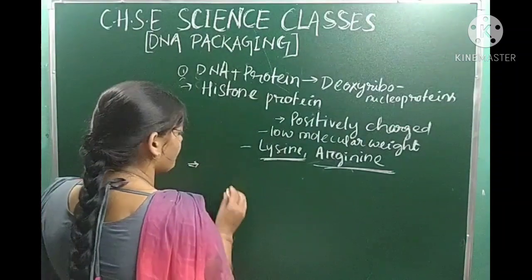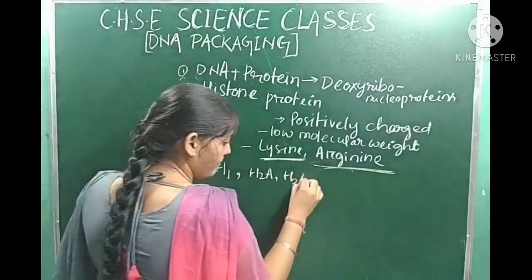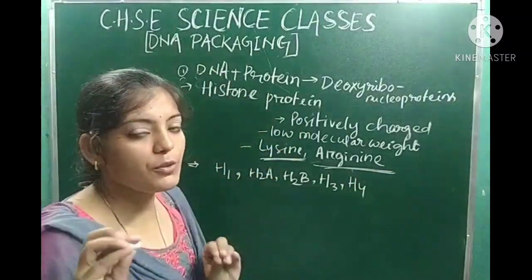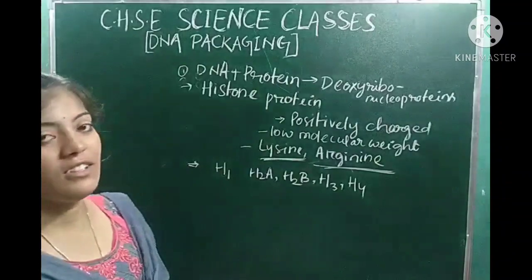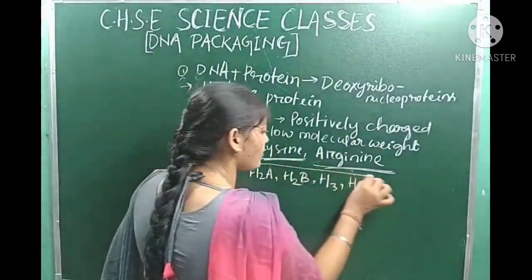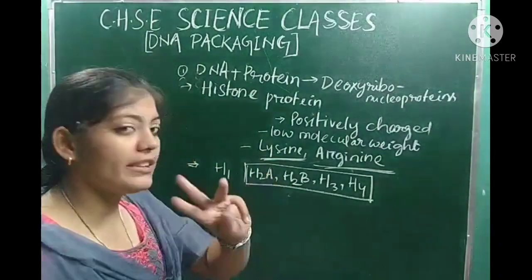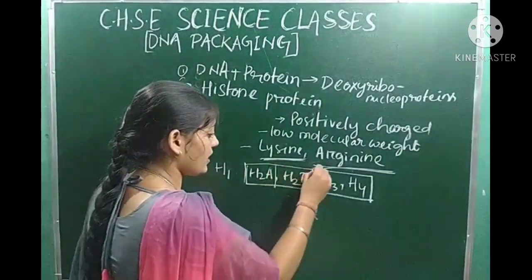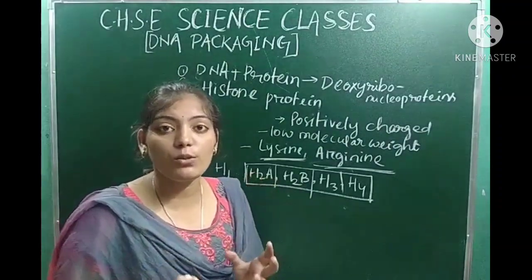There are five types of histone proteins: H1, H2A, H2B, H3, and H4. Among these, H2A, H2B, H3, and H4 each have two molecules. These eight molecules together form the histone octamer. So the histone octamer consists of 2 molecules of H2A, 2 molecules of H2B, 2 molecules of H3, and 2 molecules of H4 — totaling 8 molecules.